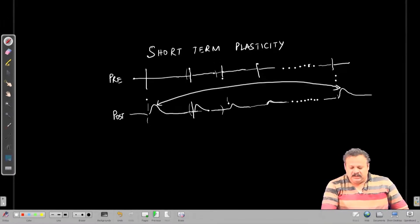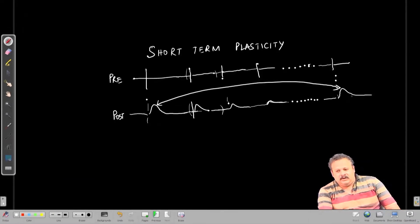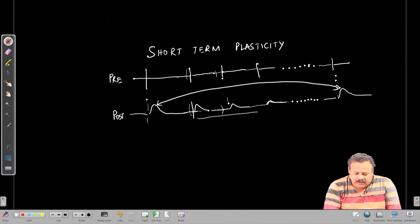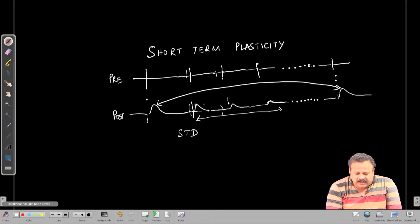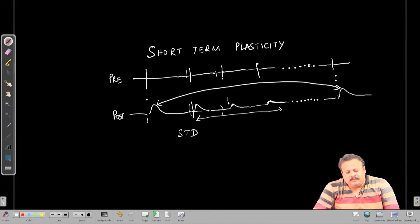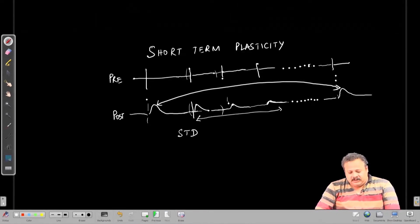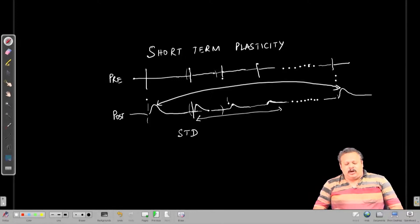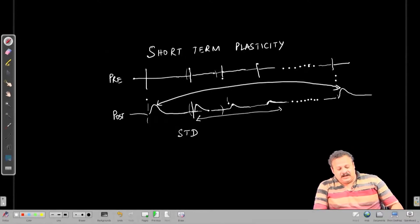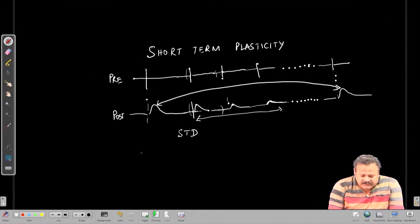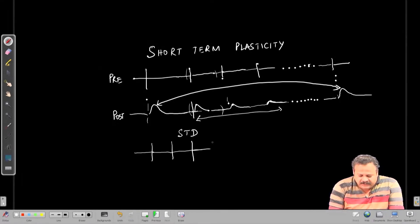We have recovered our original strength and in between we have what we call short term depression — that is the synaptic strength is reducing with every subsequent spike. It is not necessary that it will happen all the time, but in general many synapses can show short term depression where subsequent spikes produce smaller sized EPSPs and there is a weakening of the synaptic strength. This is also dependent on the gap between the spikes at the presynaptic site.